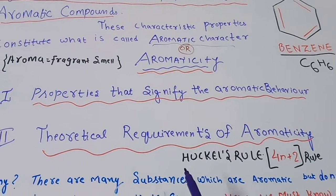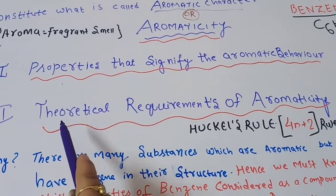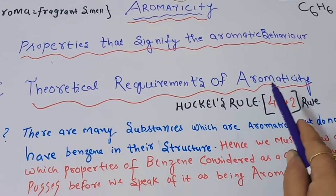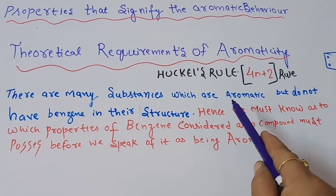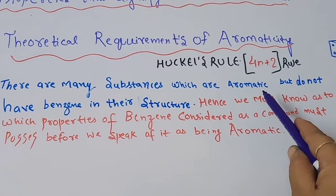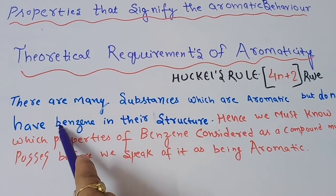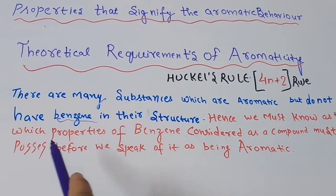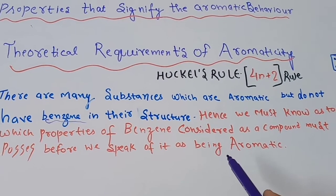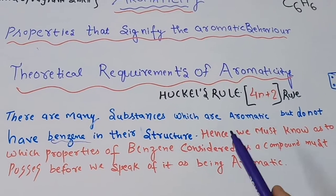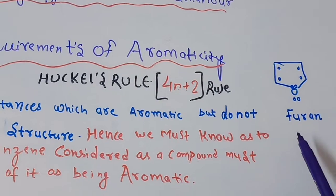We will study aromaticity under two broad headings: the properties that signify aromatic behavior, and the theoretical requirements of aromaticity, that is Huckel's rule. We need to study this because there are many substances which are aromatic — they have resemblance with benzene — but they do not have benzene in their structure. They may be cyclic but do not contain a benzene ring.